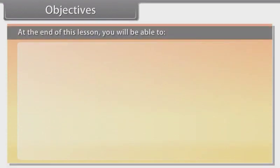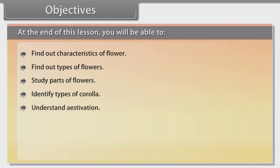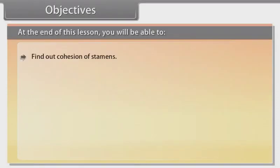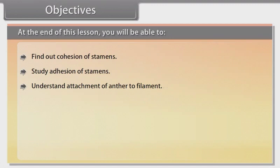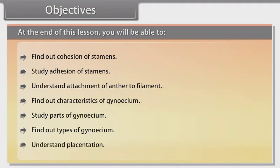Objectives: At the end of this lesson, you'll be able to find out characteristics of flower, find out types of flowers, study parts of flowers, identify types of corolla, understand estivation, find out characteristics of androecium, study parts of stamen, find out types of androecium, find out cohesion of stamen, study adhesion of stamen, understand attachment of anther to filament, find out characteristics of gynoecium, study parts of gynoecium, find out types of gynoecium, and understand placentation.